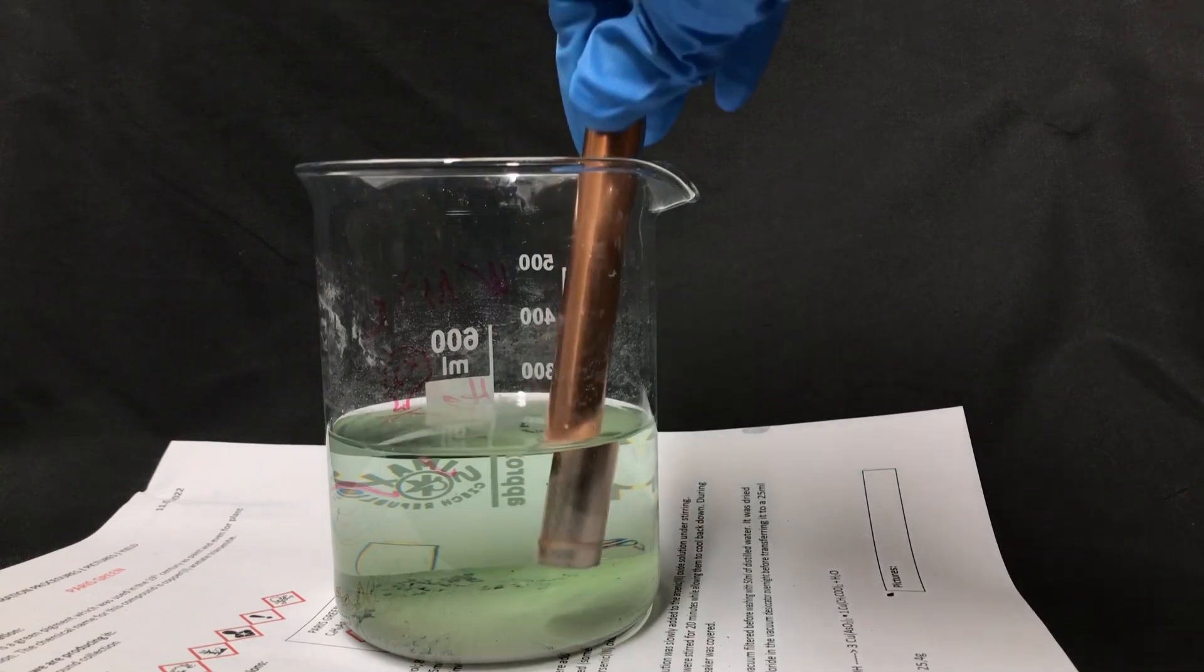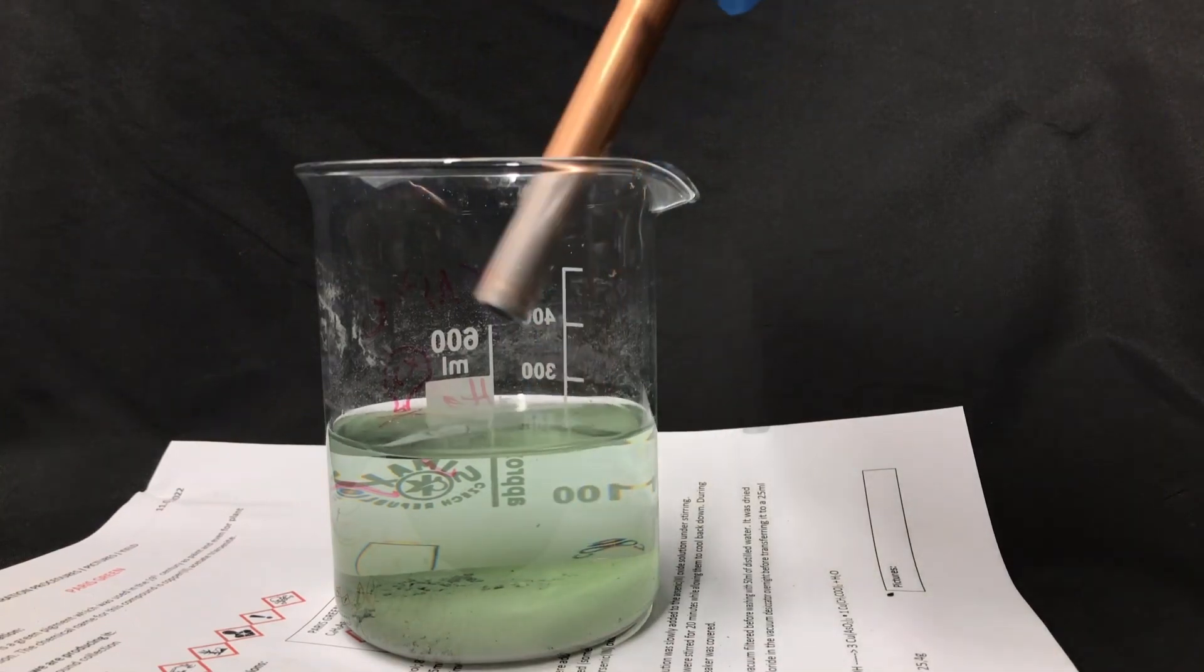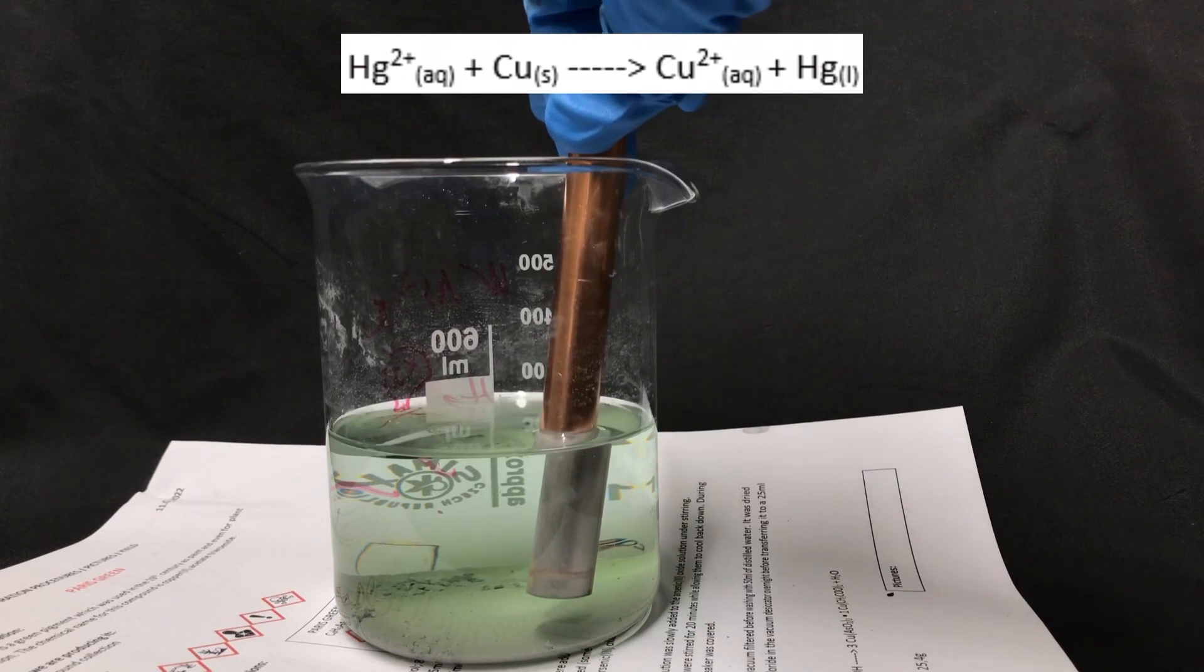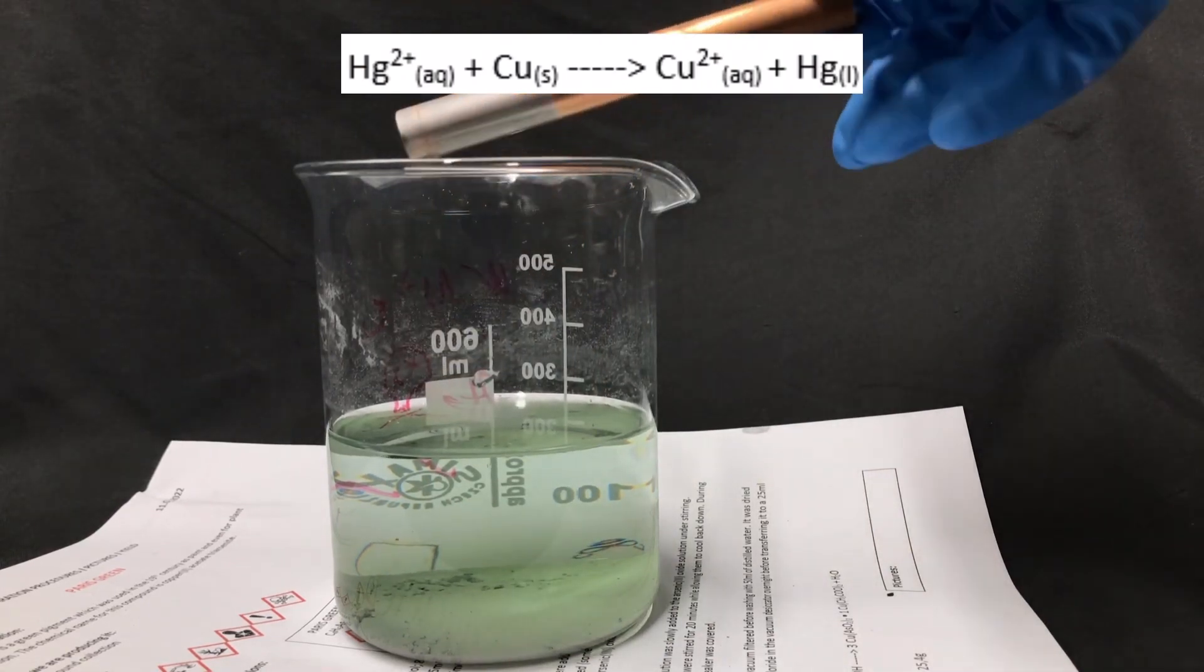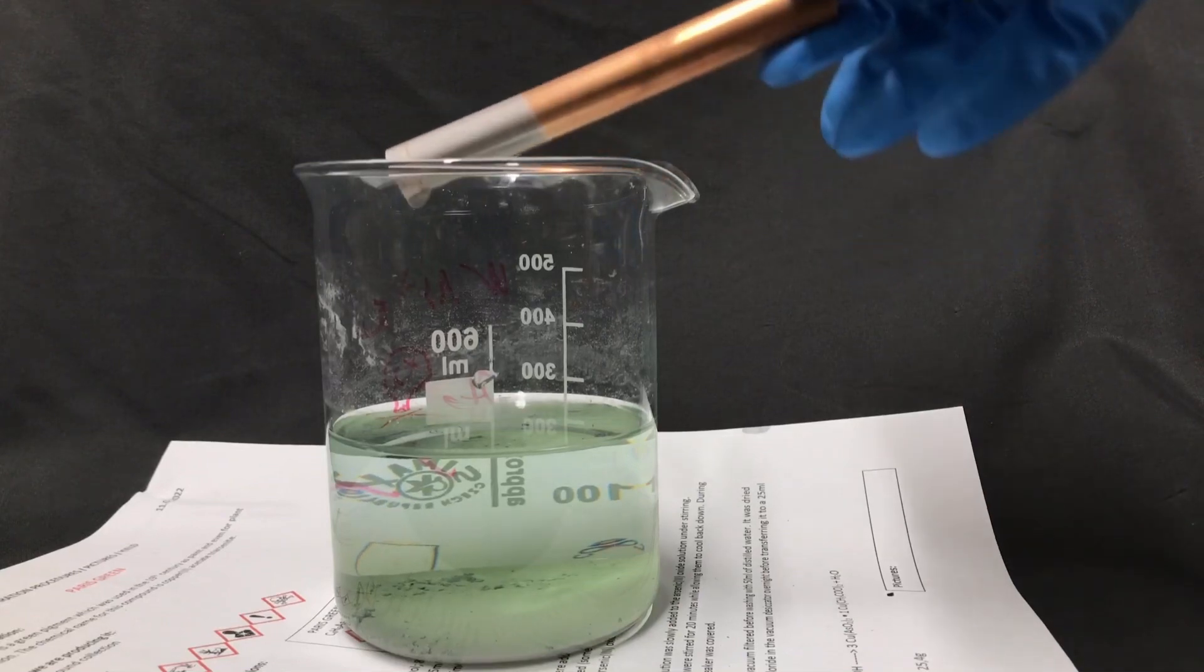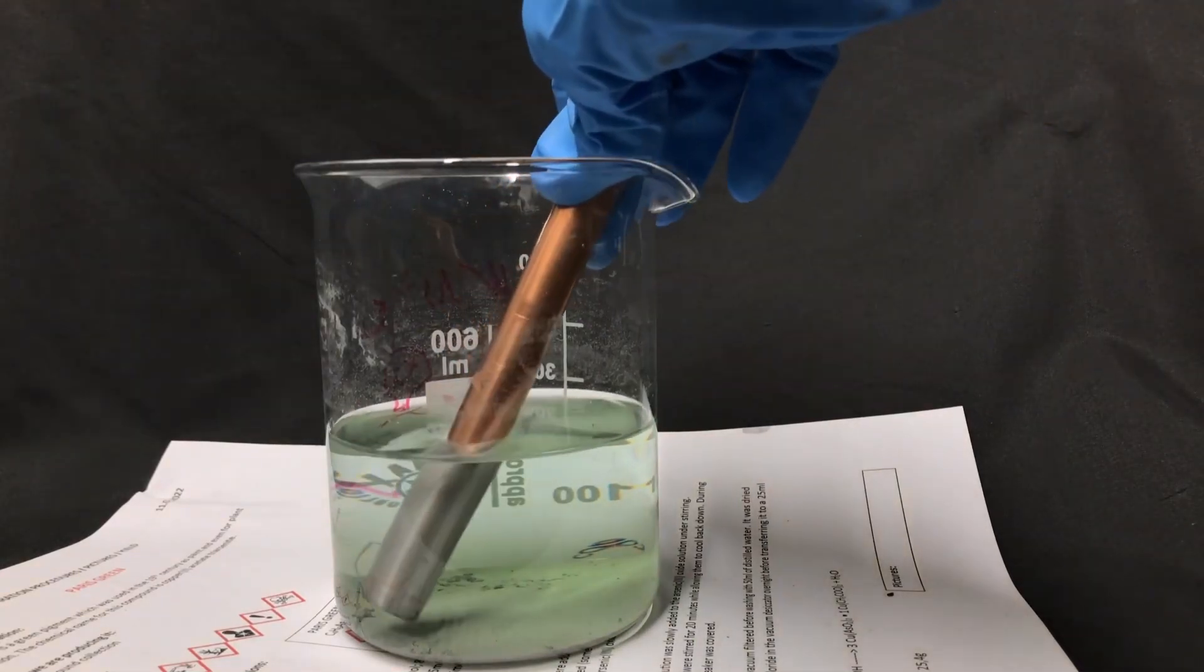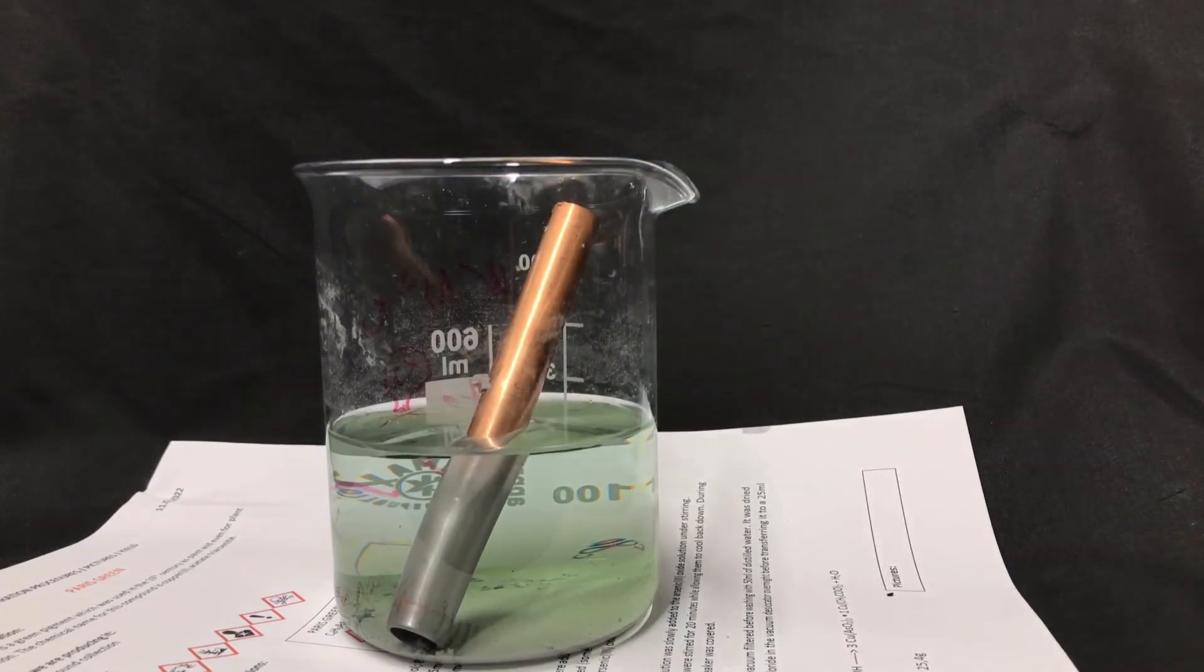To recover elemental mercury we just had to add a copper pipe. The copper reacts with soluble mercury ions to form soluble copper ions and liquid mercury. You can see that a reaction is taking place by taking a look at the pipe. It's changed its color to silver. The reason for that is that it got coated in mercury.